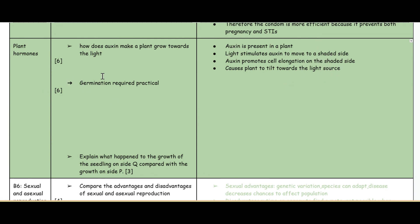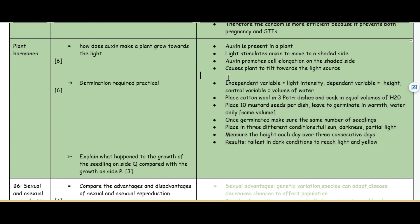Then you've got a germination practical. The independent variable, the thing you're changing, is the light intensity. The dependent variable, the thing you're measuring, is the height. The control variable, the thing you're keeping the same, is the volume of water. You're going to place cotton wool in three petri dishes, soak equal volumes of water, place 10 mustard seeds per dish, leave to germinate in warmth, water daily the same volume. Once it's been germinated, make sure that the same number of seedlings is there.